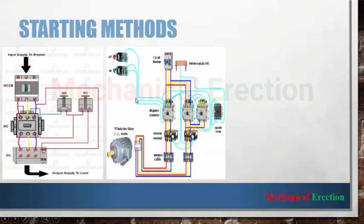Then star-delta starting. It is done to start a large motor where the starting current is too high. In such situations the motor is started in star connection and then switched to delta connection for full load running operation. First the motor is started through the star contactor, then switched after a certain period through a timer to the delta connection, and the motor finally runs in delta connection for its long operating period.